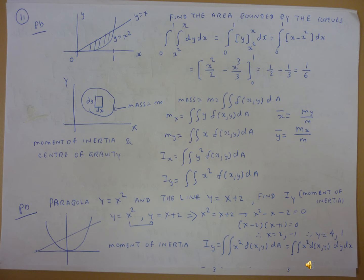Based on those formulas we will solve the next problem. The problem is given: the parabola y equals x squared and the line y equals x plus 2. We have to find Iy, the moment of inertia. So we have y equals x squared and y equals x plus 2.